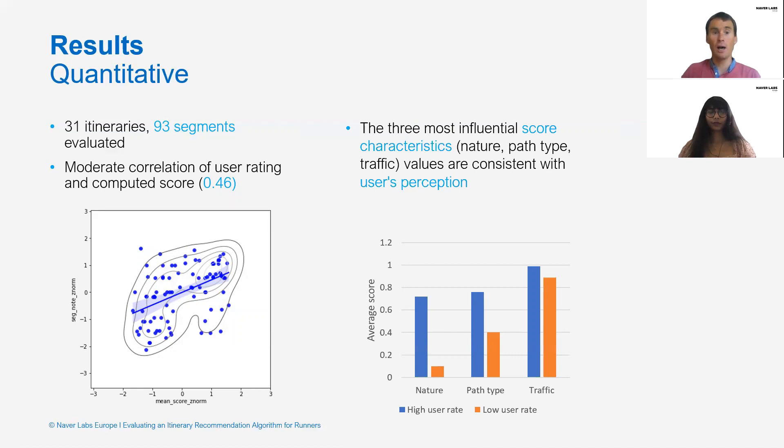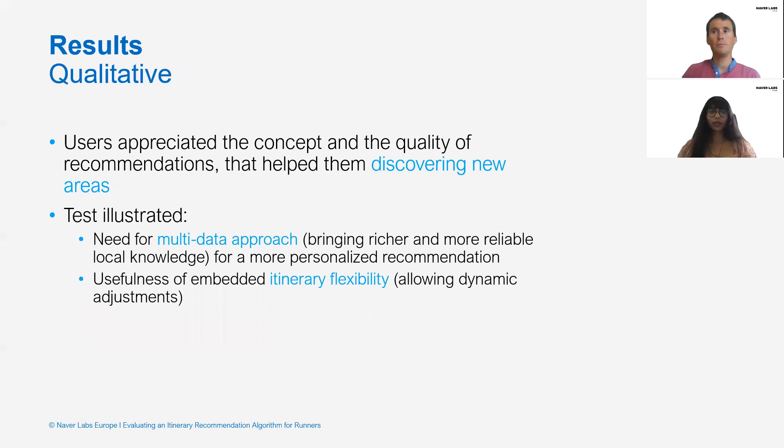For instance, segments that users rated high because of nature had a high computed nature score of 0.72. The analysis of qualitative data showed that most users appreciated the concept and the quality of recommendations. It helped them discover new areas.